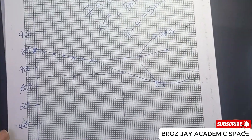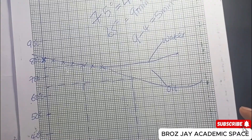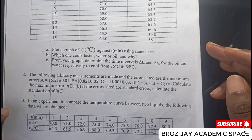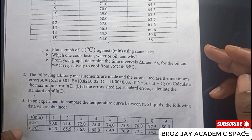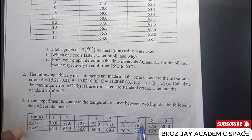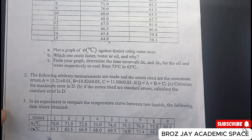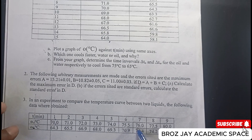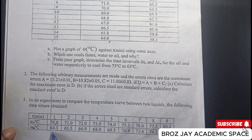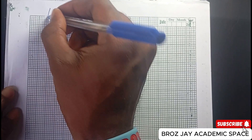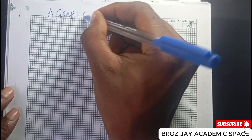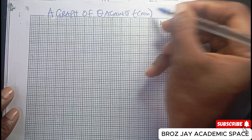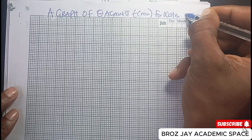That's how to get question 1c. Now let's look at the second graph — number three. In an experiment to compare the temperature curve between two liquids, the following data was obtained. We have time values 1 through 9, with temperatures for water: 70, 71, 72, 73, 74, 75.5, 76.0, 77.5, 80 — and corresponding values for liquid. Plot a graph of theta against time for water and liquid.